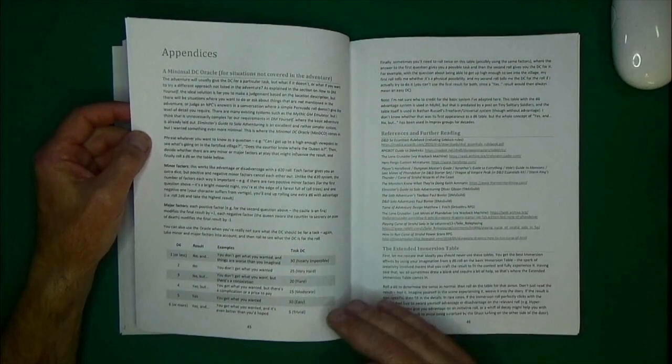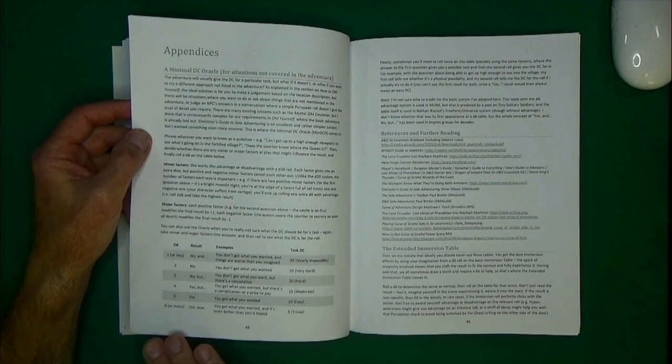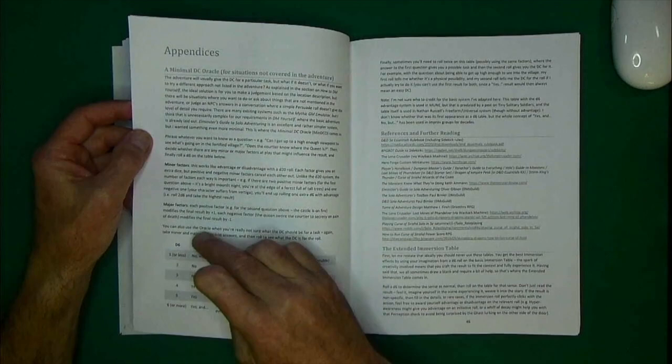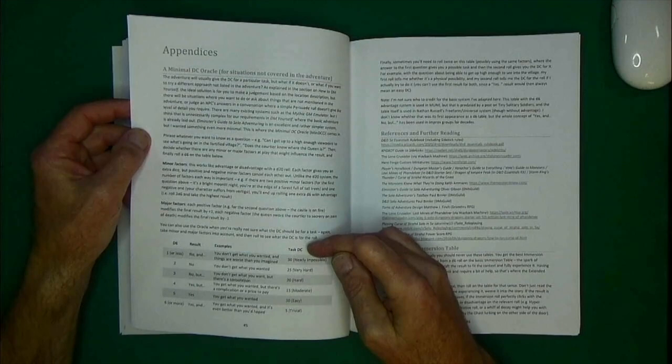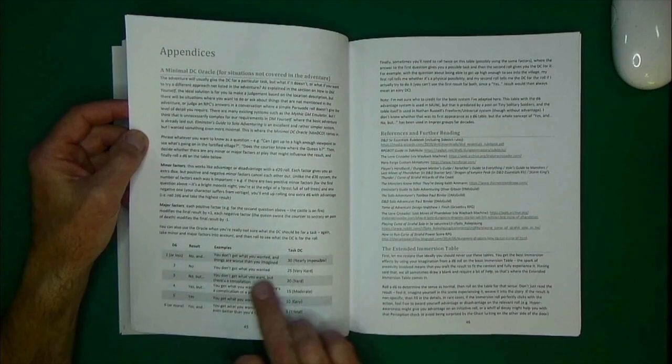But then we get into the appendix, which they have their own little oracle back here. Millions of different oracles. This is just a simple D6 one, but it kind of breaks it down. You roll the D6, you got a yes, no result. You got some examples.